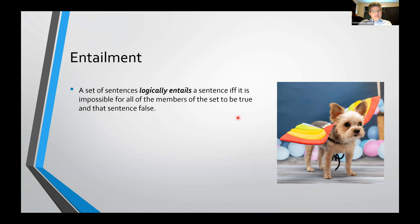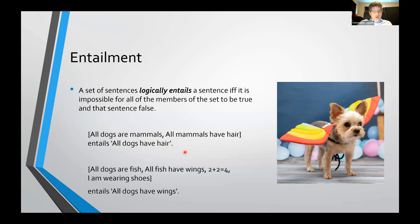Entailment: a set of sentences logically entails a sentence if it's impossible for all the members of the set to be true and that sentence be false. So: all dogs are mammals, all mammals have hair — that entails all dogs have hair. Also: all dogs are fish, all fish have wings, two plus two equals four, I am wearing shoes — this entails all dogs have wings. Notice that adding more members to a set does not change what it entails.